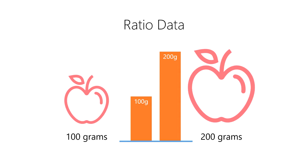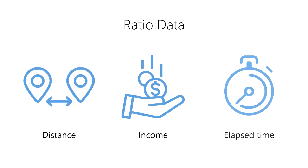So 200 grams of mass is twice as much mass as 100 grams of mass. Other examples of ratio data include the distance between two points, income from your job, and elapsed time.